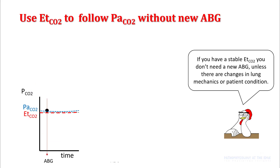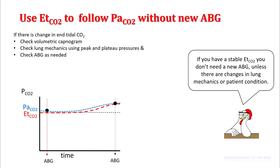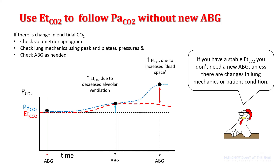Use your end-tidals to follow PaCO2 without a new blood gas. If you have a stable end-tidal, you don't have to get a new blood gas unless there are changes in lung mechanics or patient condition. If there are changes, look at your waveform and volumetric capnogram, check lung mechanics using peak and plateau pressures, and get an ABG if you need one. If end-tidals have risen and you repeat an ABG showing no difference between PaCO2 and end-tidal, that means increased end-tidal is due to decreased alveolar ventilation. If you see a gap between PaCO2 and end-tidal CO2, that means there is increased dead space ventilation.